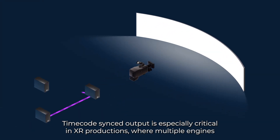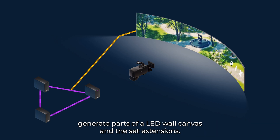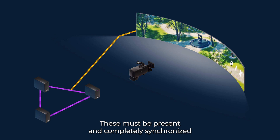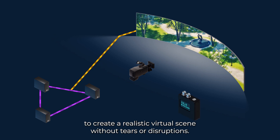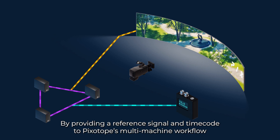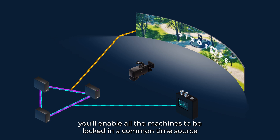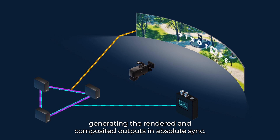Timecode synced output is especially critical in XR productions, where multiple engines generate parts of an LED wall canvas and the set extensions. These must be presented completely synchronized to create a realistic virtual scene without tears or disruptions. By providing a reference signal and timecode to Pixytope's multi-machine workflow, you'll enable all the machines to be locked in a common time source, generating the rendered and composited outputs in absolute sync.